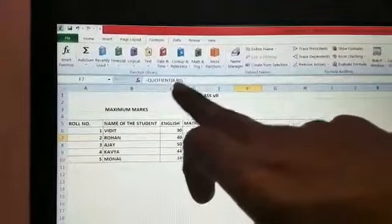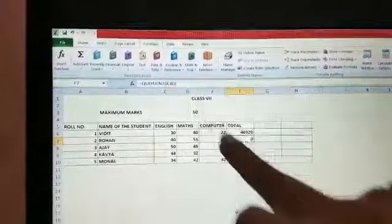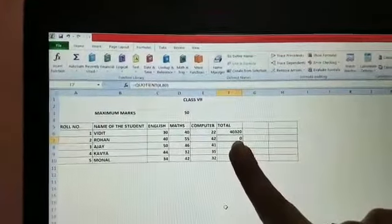You can see here the function is inserted: equals to quotient 8 comma 80, and the value will be in the cell. So this way we are going to insert a function in an Excel sheet.